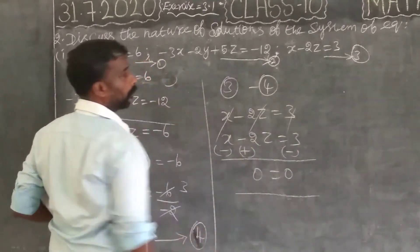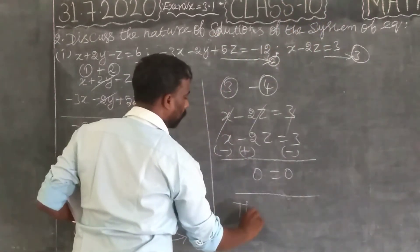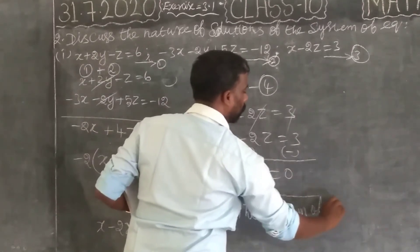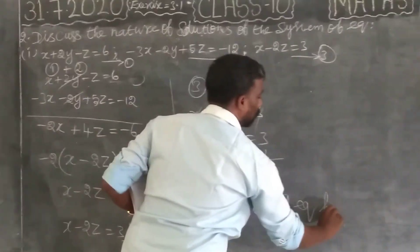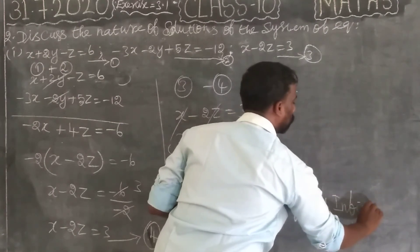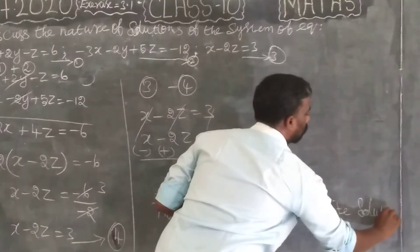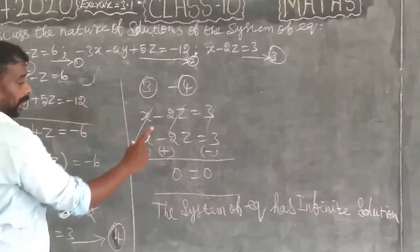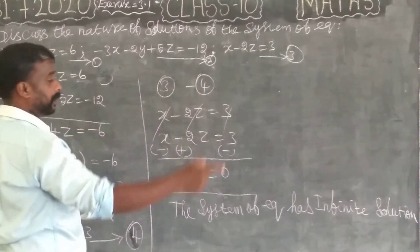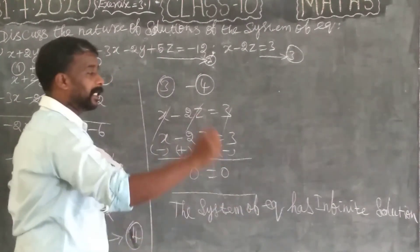After cancellation, the result is 0 equal to 0. Since LHS equal to 0 and RHS equal to 0, LHS equals RHS. Therefore 0 equals 0, and the system of equations has infinity solutions.